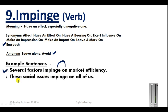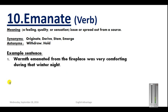Example sentences for impinge: 'Several factors impinge on market efficiency' — they affect market efficiency. Note that impinge is always followed by the preposition 'on.' And: 'These social issues impinge on all of us.' The tenth word is 'emanate,' which means to emerge from somewhere — a feeling, quality, or sensation that issues or spreads out from a source. Synonyms are: originate, derive, stem, and emerge. Antonyms are withdraw and hold.